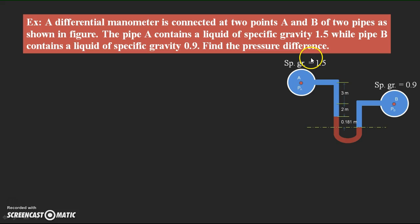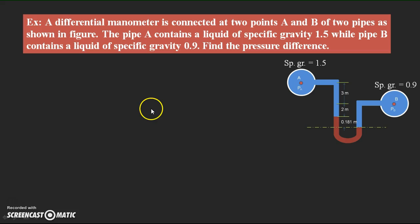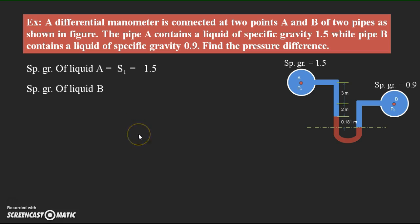Now we write the given information and find the densities of the two liquids, since density is important for finding the pressure in the two limbs. Based on the specific gravities given, we can find the densities. The specific gravity of liquid A in pipe A is assumed as S1, equal to 1.5, and the specific gravity of liquid B in pipe B is S2, equal to 0.9.